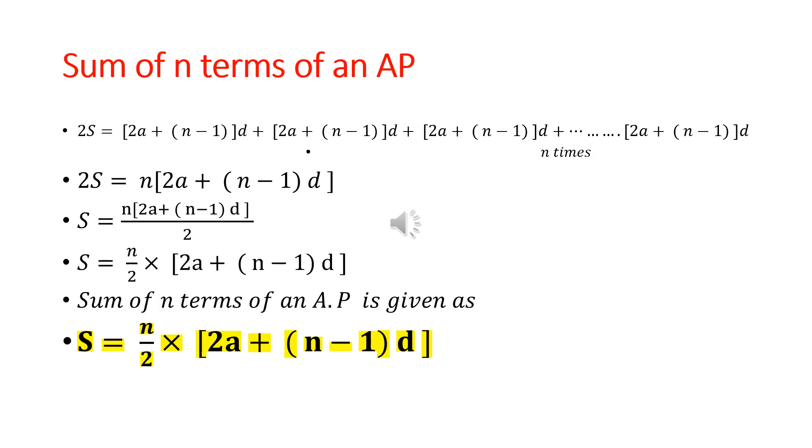So we have 2S = n × [2a + (n - 1)d]. To find S, we divide by 2, giving us S = (n/2) × [2a + (n - 1)d]. This is the formula—a very important formula for the sum of n terms of an AP.